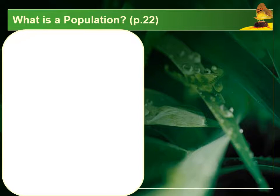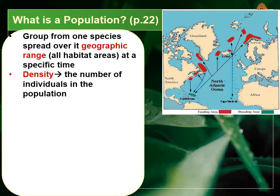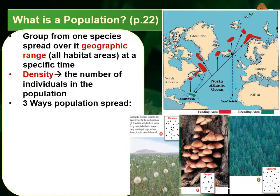As we go through the population models, it's important to understand exactly what we mean when we talk about different populations. A group of one species is our population, and a population can have a geographical range — all the different habitats and areas across different environments, biomes, and areas of the earth where we could find that particular species. The number of individuals inside that overall geographical range is the population density. There are three ways that a population will disperse or spread its density over the geographical range.